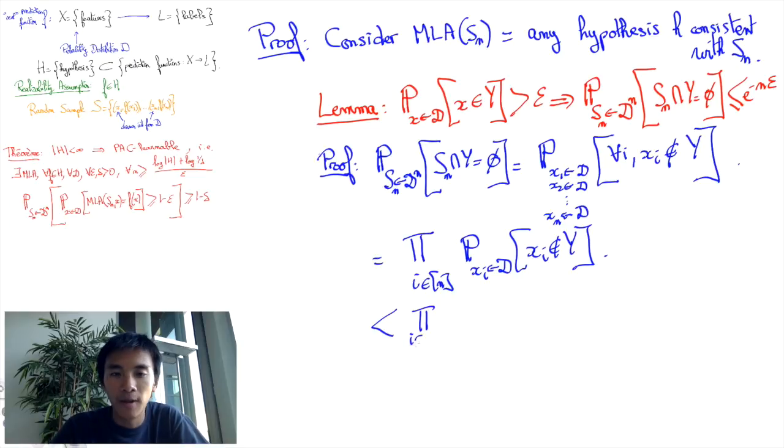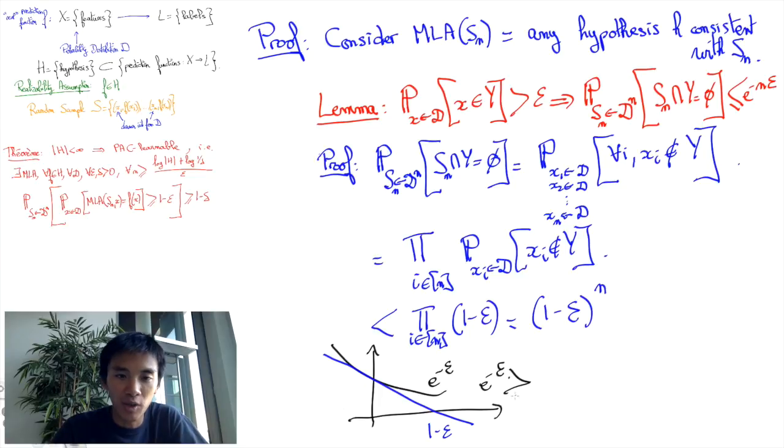1 minus epsilon to the power of n. And now we're going to use the classical inequality 1 minus epsilon is smaller than e to the minus epsilon, which can be visualized graphically in this figure and be proved formally using a convexity argument. This yields the upper bound e to the minus epsilon to the power n, which is equal to e to the minus n epsilon.